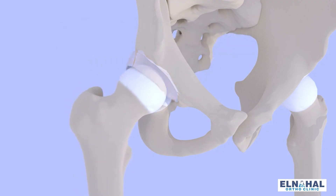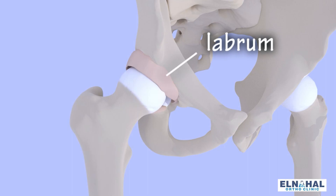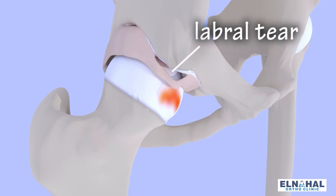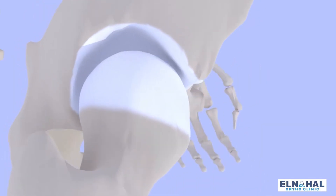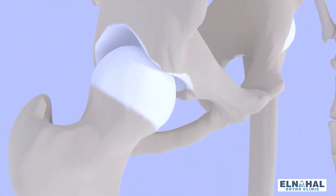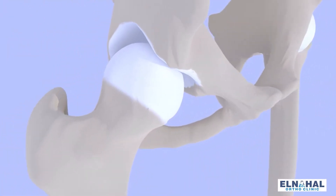Around the socket we have a soft tissue called the labrum, which acts to deepen the socket and increase the stability of the femoral head. With this abnormal contact, the labrum would then tear — this is what we call a labral tear. As the disease progresses, this leads to damage of the articular surface itself and eventually leads to arthritis.